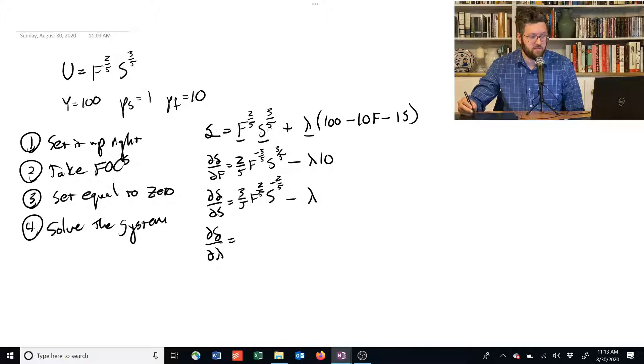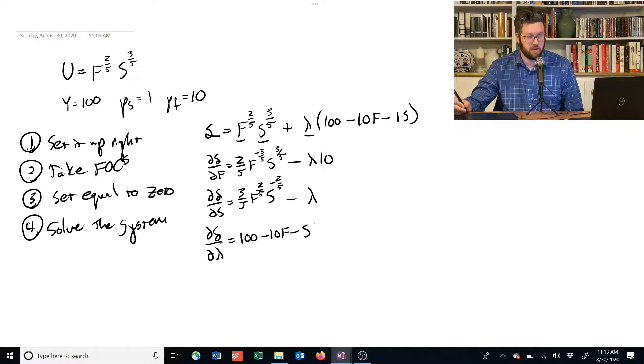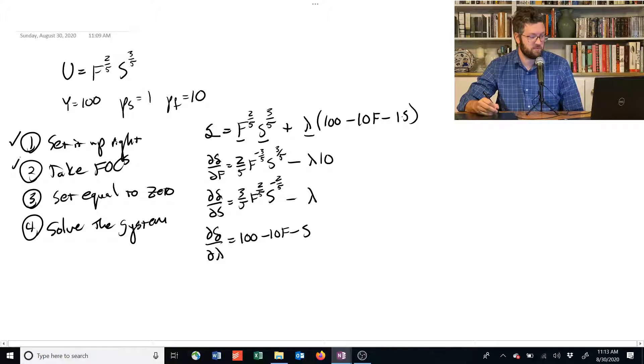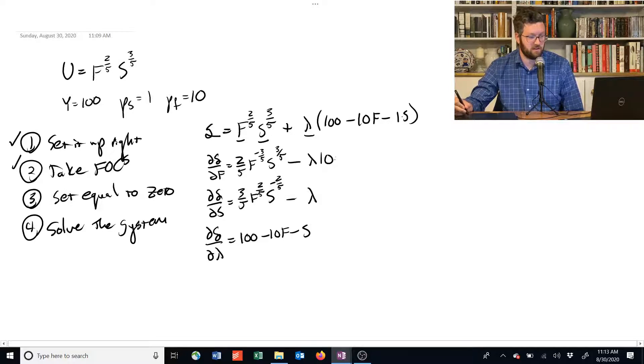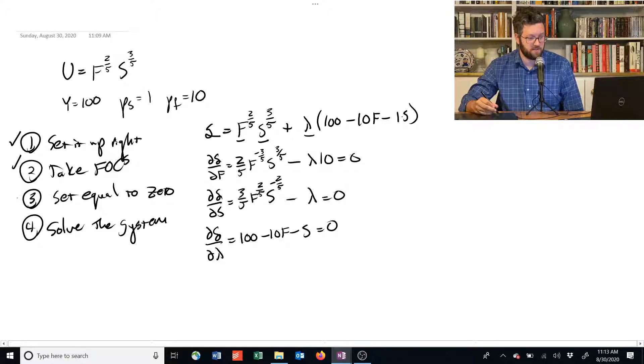Now we have to remember to take the partial derivative with respect to lambda. Lambda doesn't appear anywhere in here, so we can ignore that. It appears here. There's no exponent, so the derivative of it is one, but we have to multiply it by this term here. And instead of writing 1 times S, I'm just writing S now. That's step one and step two done, so let's go to step three. Set these all equal to zero.